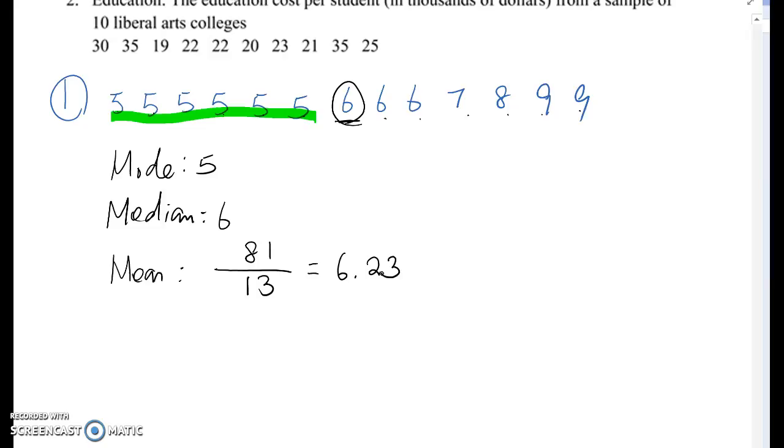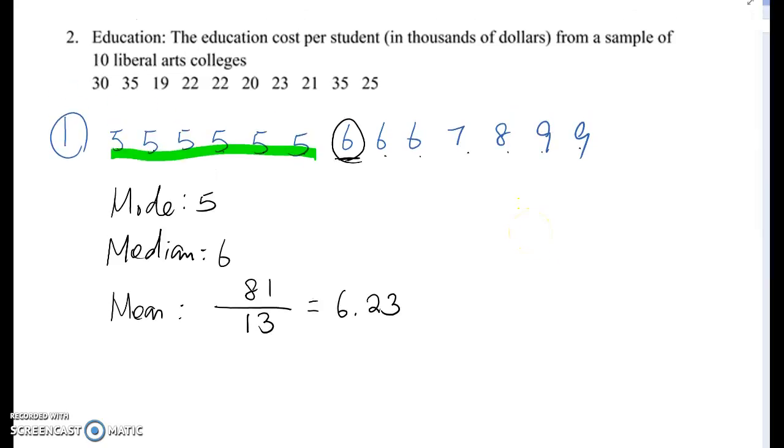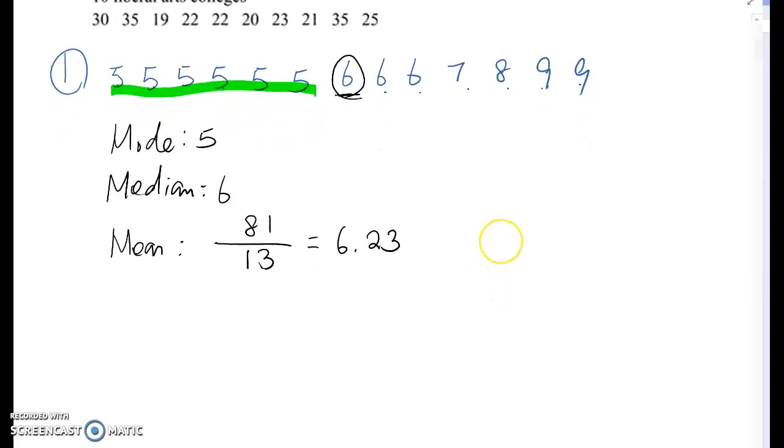Okay, then look at the second example here, education. The education cost per student in thousands of dollars from a sample of 10 liberal arts colleges. So number two case. Also, we want to rewrite all the data using ascending order.